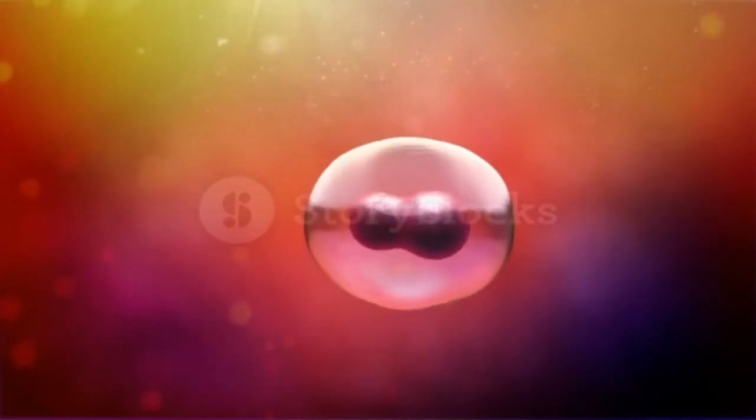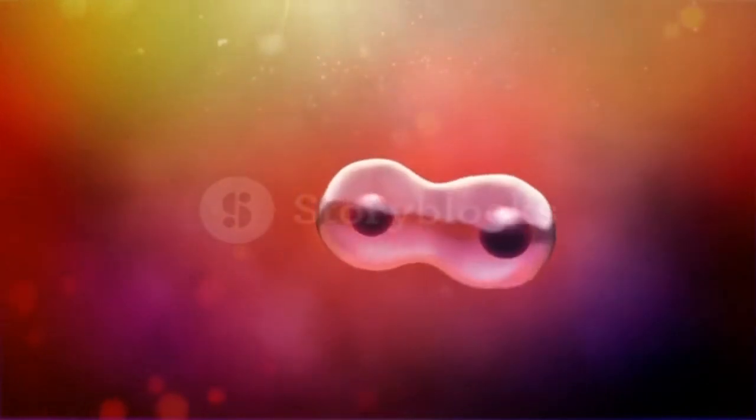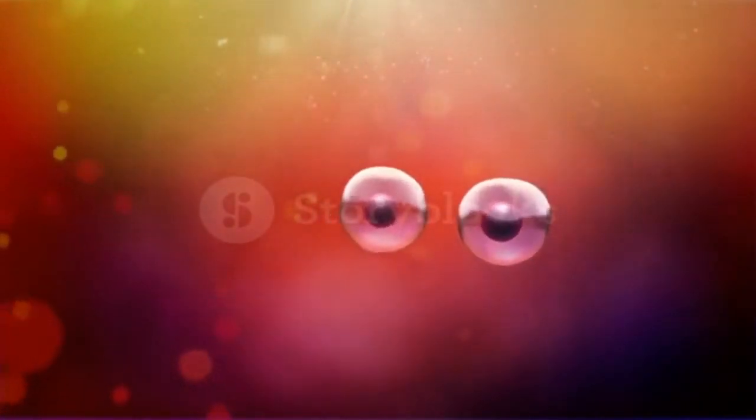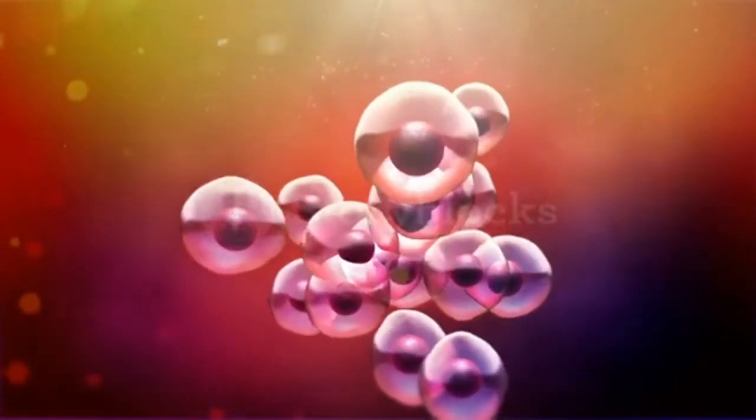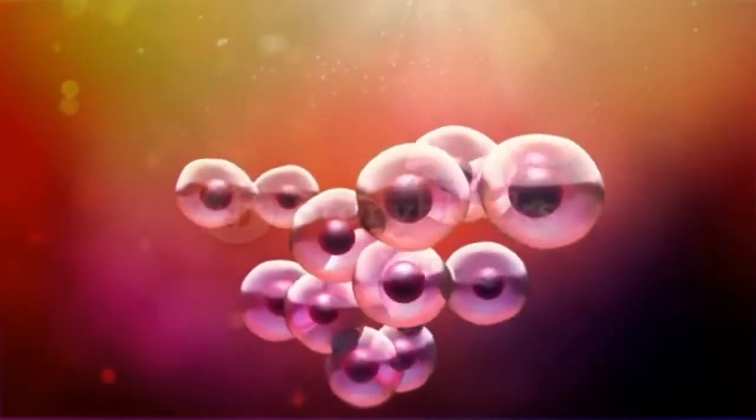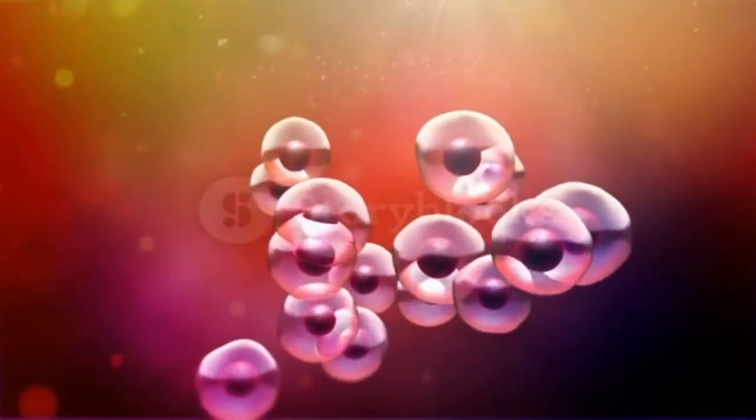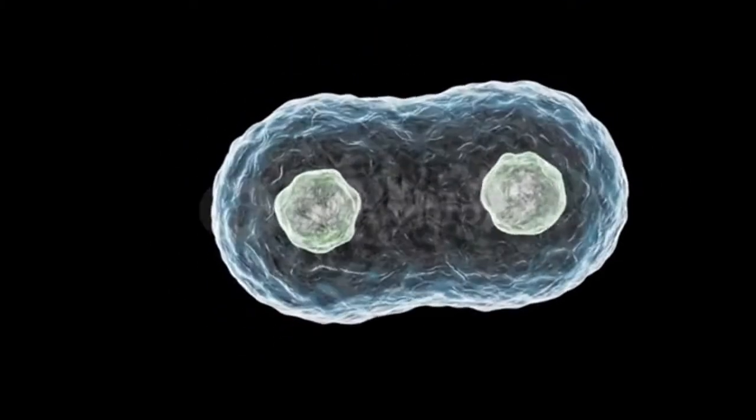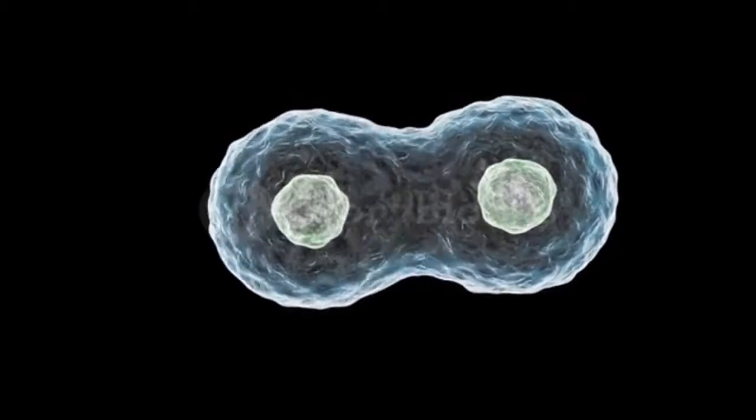Binary fission is the method by which prokaryotes produce new individuals that are genetically identical to the parent organism. Prokaryotes, such as bacteria, propagate by binary fission. For unicellular organisms, cell division is the only method used to produce new individuals.